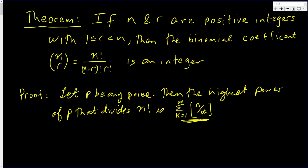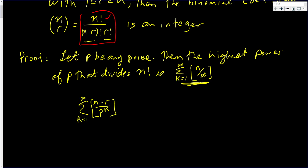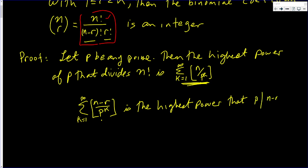We just covered n factorial — that's the top. Now let's do the same for the other two factorials. The summation of the floor of (n minus r) over p to the k, as k goes from one to infinity, is the highest power of p that divides (n minus r) factorial.